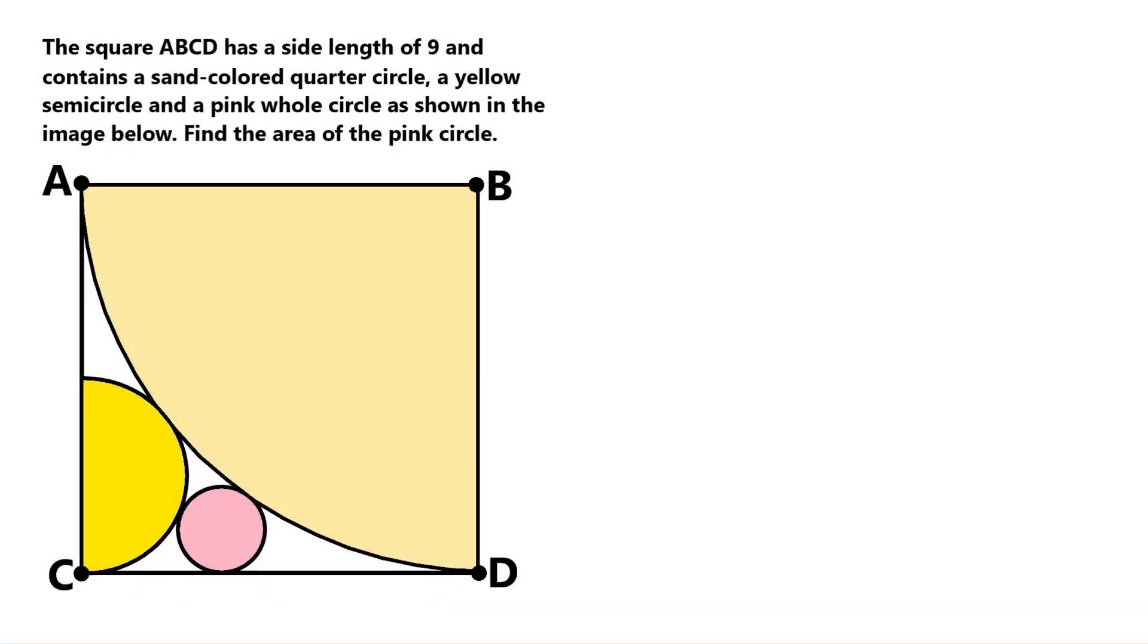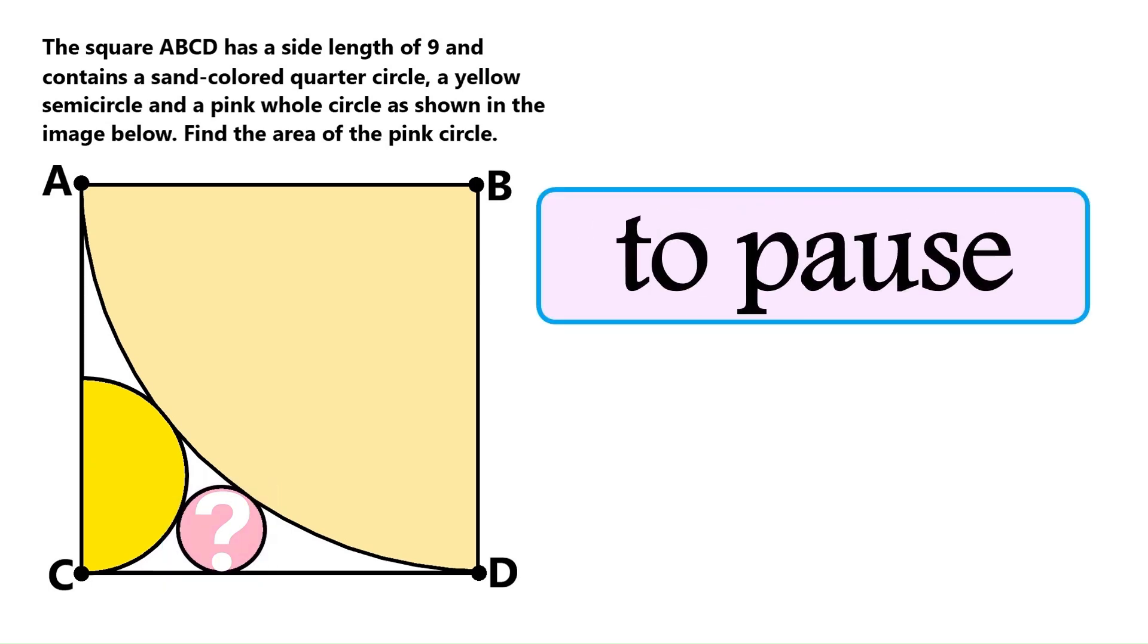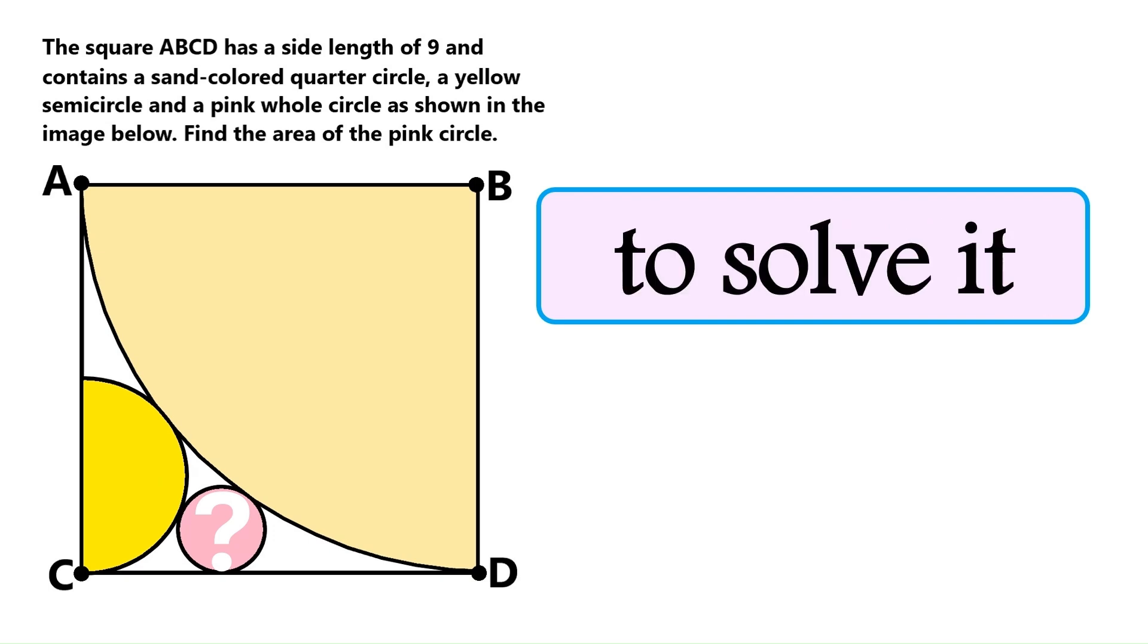In this super exciting geometry problem, we got this square ABCD, and its side length is 9. Inside the square we got this sand-colored quarter circle, this yellow semicircle, and finally this pink whole circle down here. We actually want to find the area of this small pink circle. If you would like to try this on your own, now is the time to pause the video, because I'm starting to solve it right now.